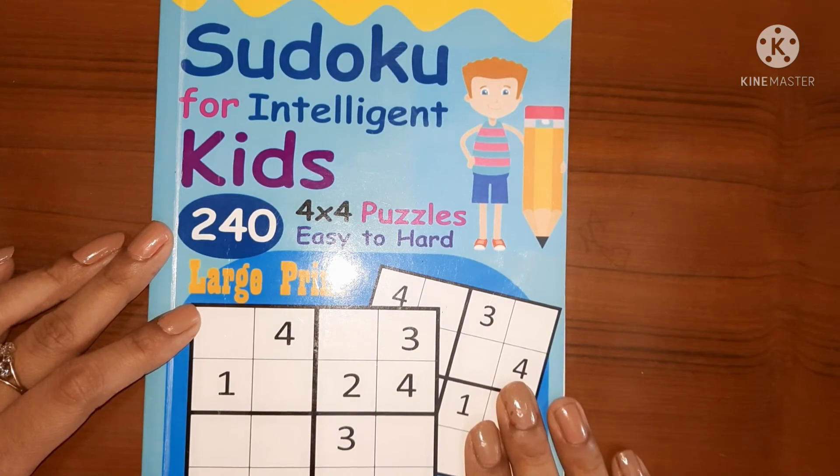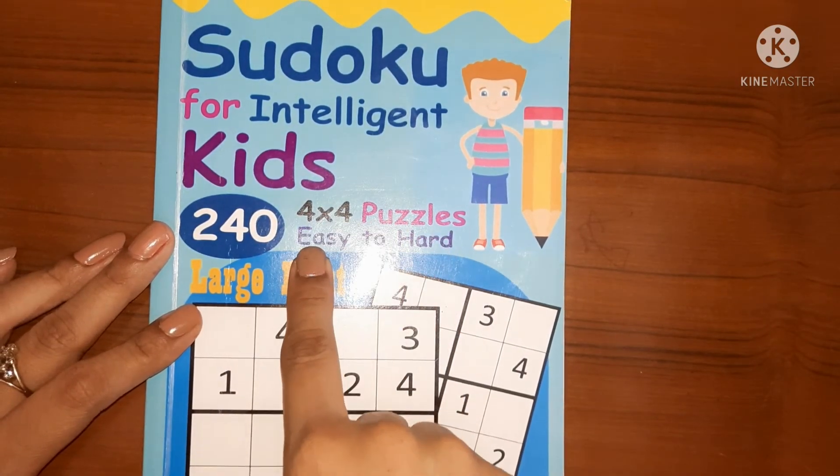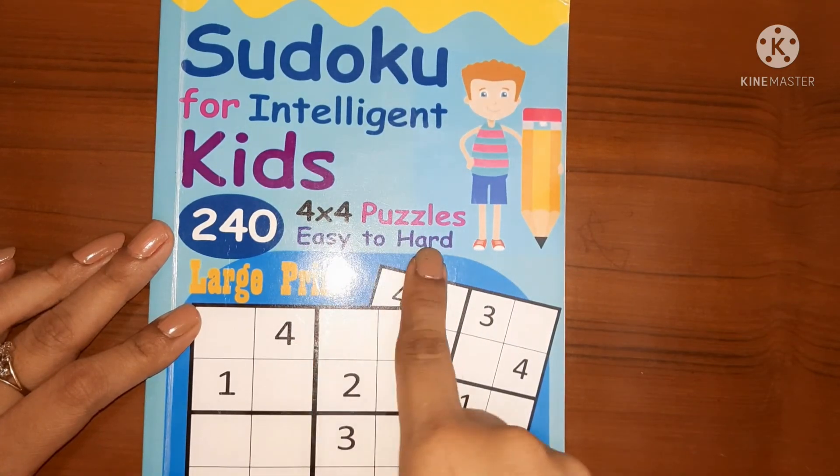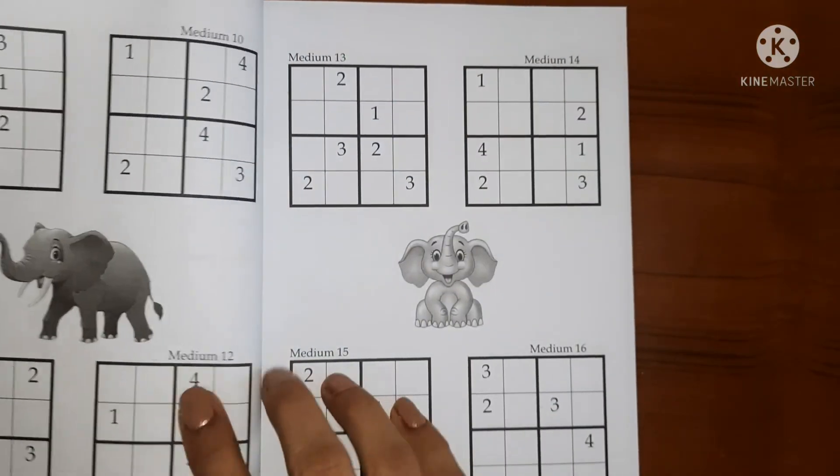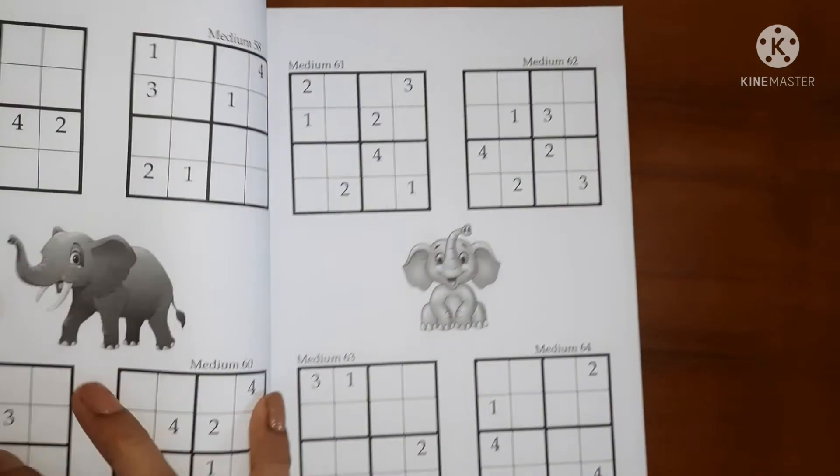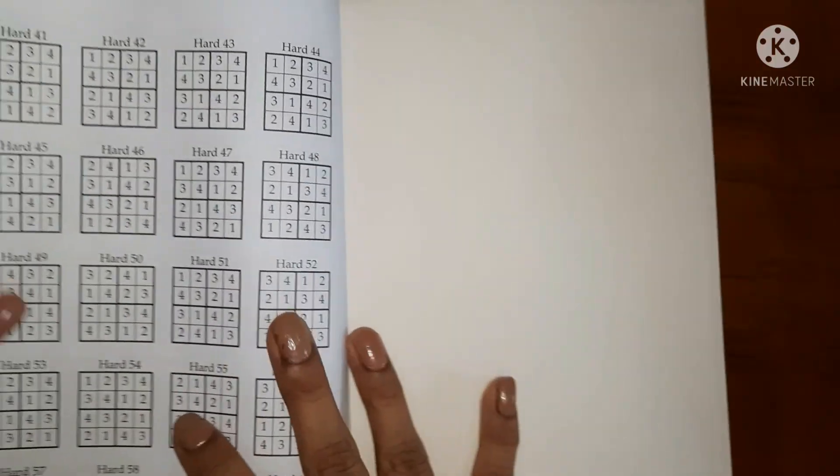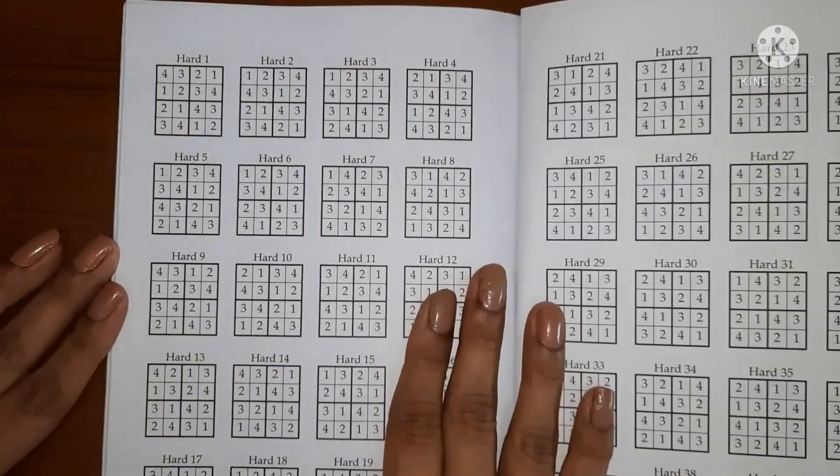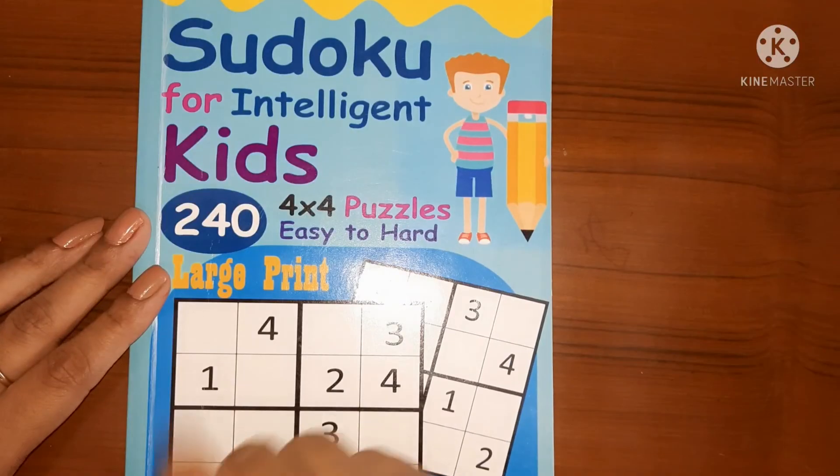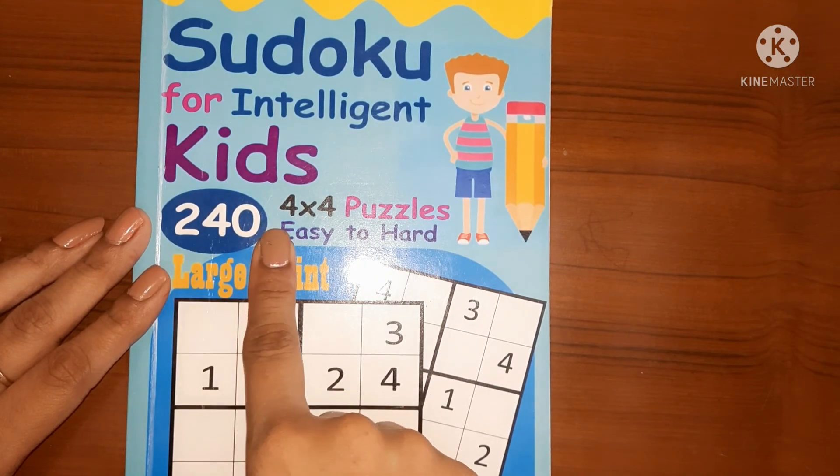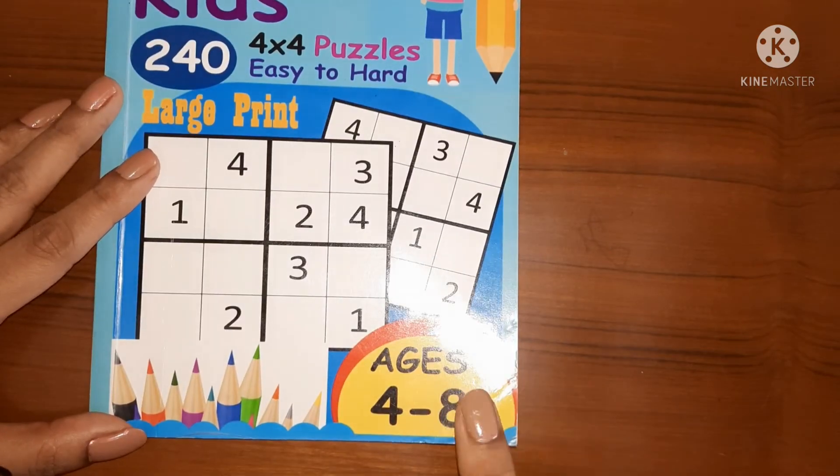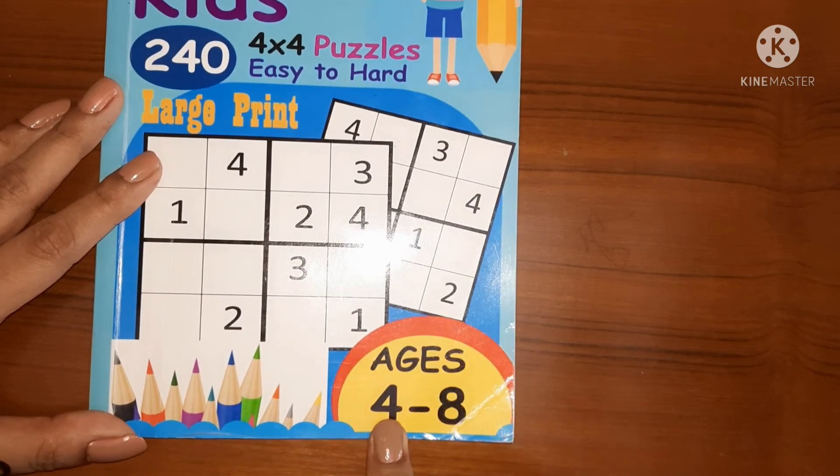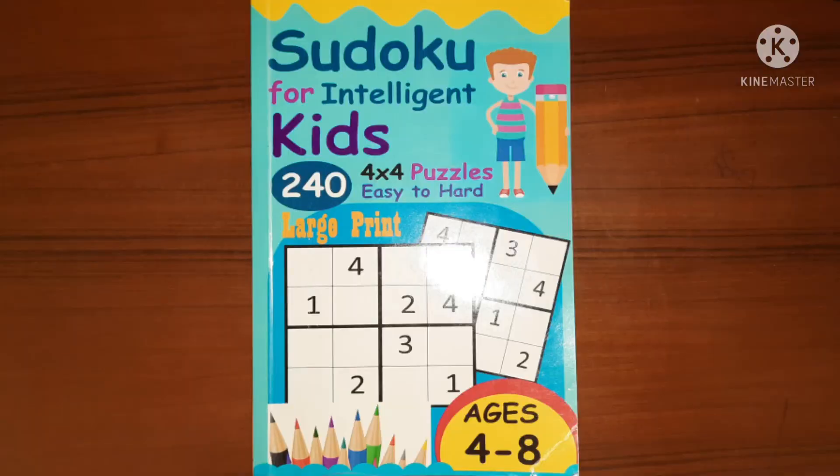I have this book of Sudoku 4x4 puzzle. It has 3 difficulty levels from easy to hard. In starting, easy puzzles are there, and then medium puzzles, and then difficulty level increases to hard. At the end of this book, answers are also given of every puzzle. This book contains 240 puzzles and this book is recommended for the children aged between 4 to 8. So this book can be used by older people as this book is designed for beginners only. And it can be a great gift option.